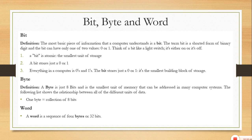We can think of a bit like a switch which is on and off. If its value is 1, the switch is on, and if the value is 0, the switch is off. So this is the smallest unit of storage, which comprises a combination of 0s and 1s. Machine language is basically a combination of binary digits.